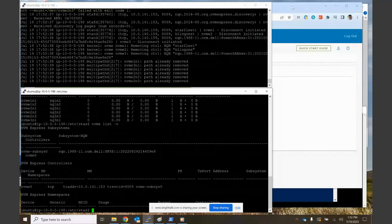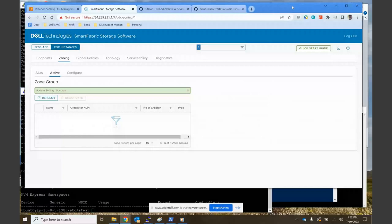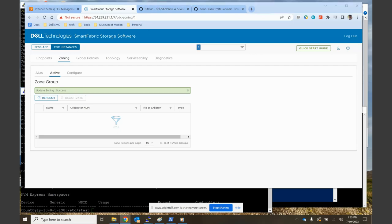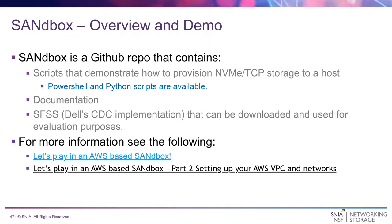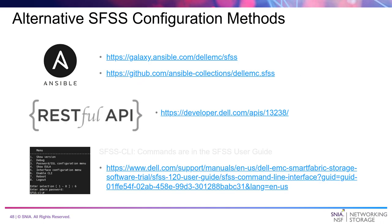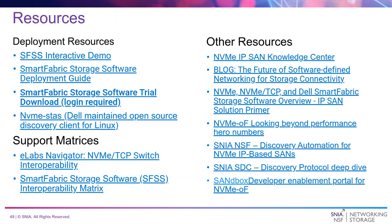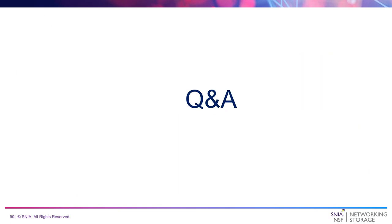To demonstrate removing those volumes, I go back to SFSS, navigate to zoning, and deactivate the zone group. We see a whole bunch of events happen, and running nvme list -v again we're back to just seeing SFSS. That's an extremely simple, trivial script — but it's provided on Sandbox as an example so you understand how to interact with it. For SFSS, there are alternative configuration methods: we support Ansible, the REST API I just demonstrated, and a CLI. There are also interactive demos and many online resources with links provided at the end of the presentation.